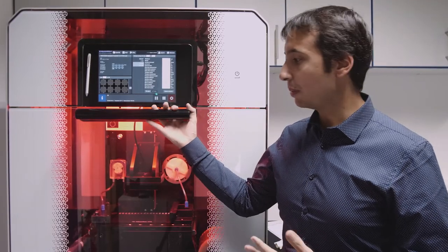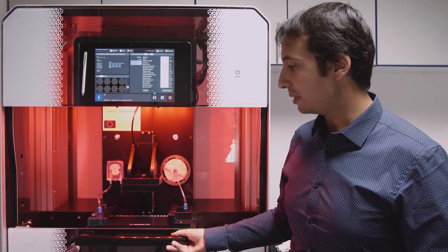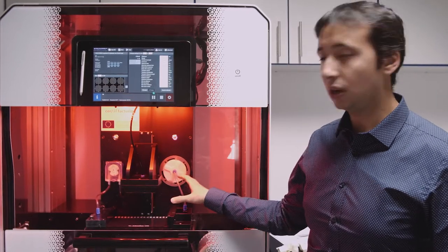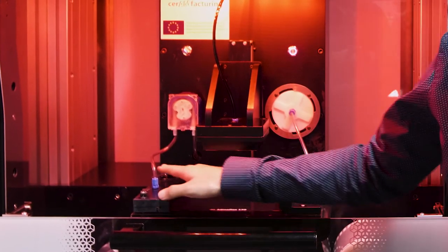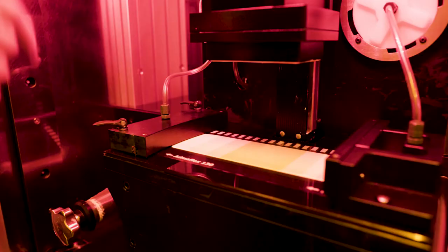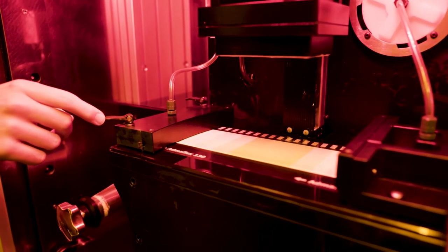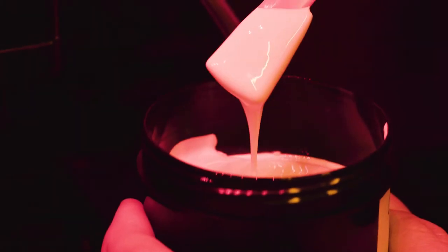In the machine that we're presenting for the Ceram Factoring project, we have a tape casting system where we can load a ceramic resin that is transported to a printing area. The material that is not used for the printing is collected on a wiper construction and is pumped and reconditioned back, ready to print the next layer.